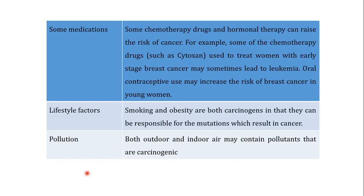Some medications are also carcinogens. For example, some chemotherapy drugs and hormonal therapy can raise the risk of cancer. Some chemotherapeutic agents like cyclophosphamide (Cytoxan), used to treat women with early-stage breast cancer, may sometimes lead to leukemia — so a drug used to treat one cancer can actually lead to the formation of another cancer. Oral contraceptive use may also increase the risk of breast cancer in young women. Lifestyle factors such as smoking and obesity are also both carcinogens.